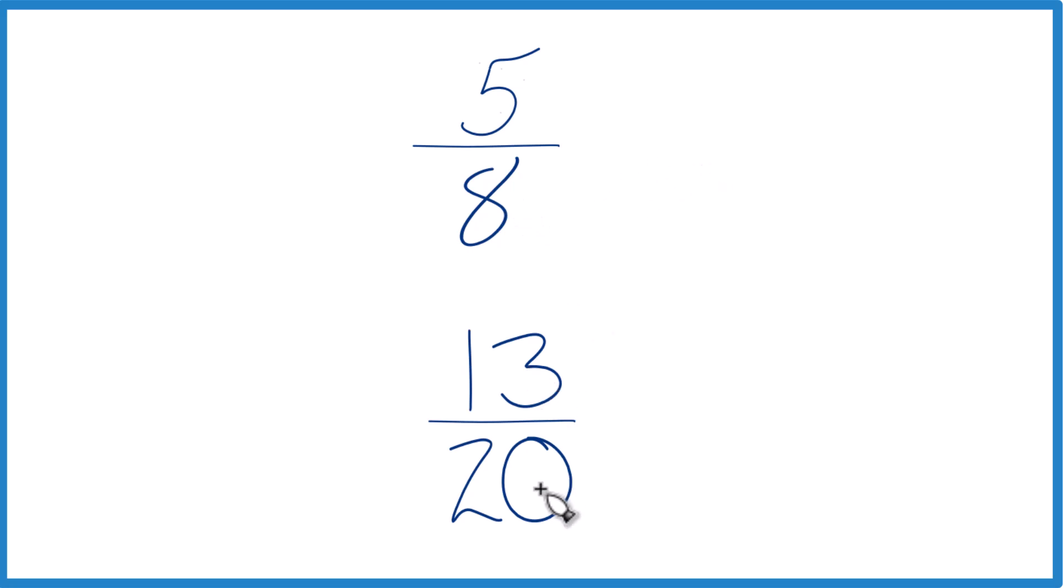Get a decimal, 13 divided by 20, get a decimal, and then compare the decimals. Or you could find a common denominator. Right now we have 8 and 20, but if we had the same denominator we could just compare the numerators and we'd be done.